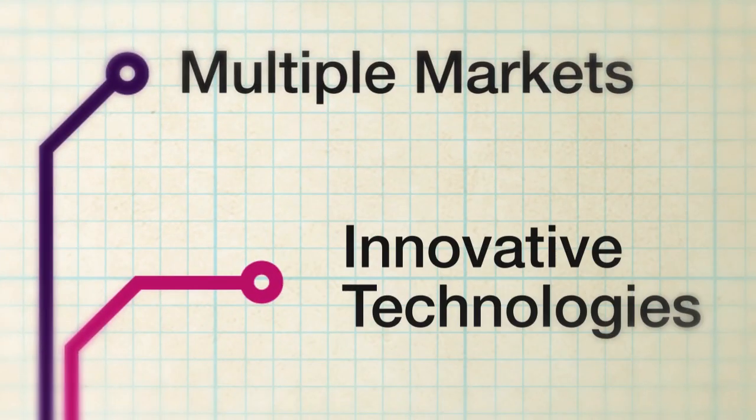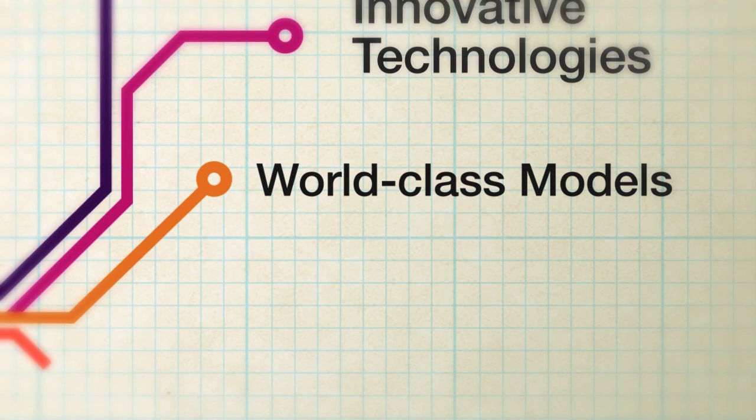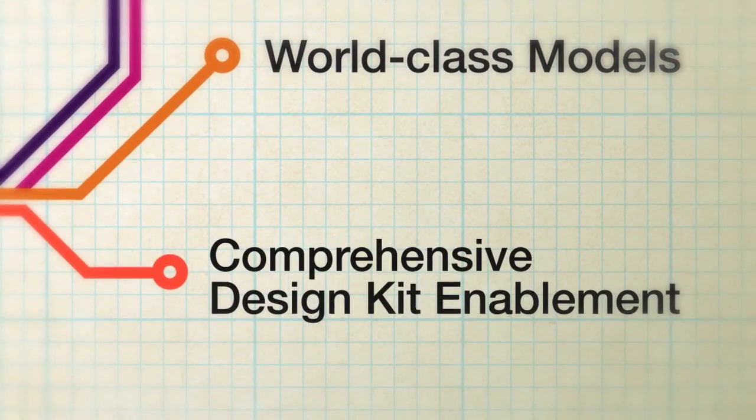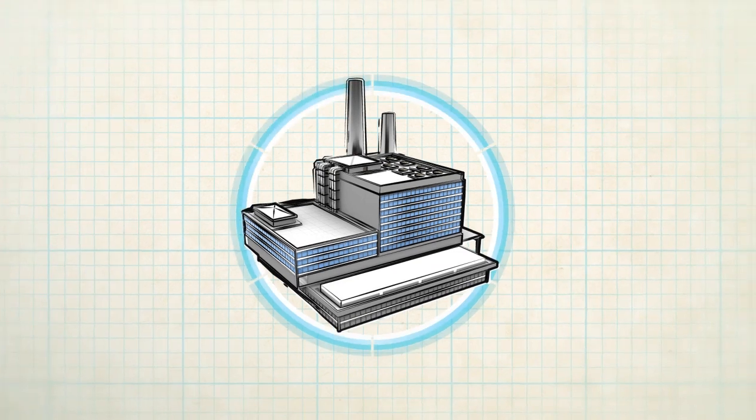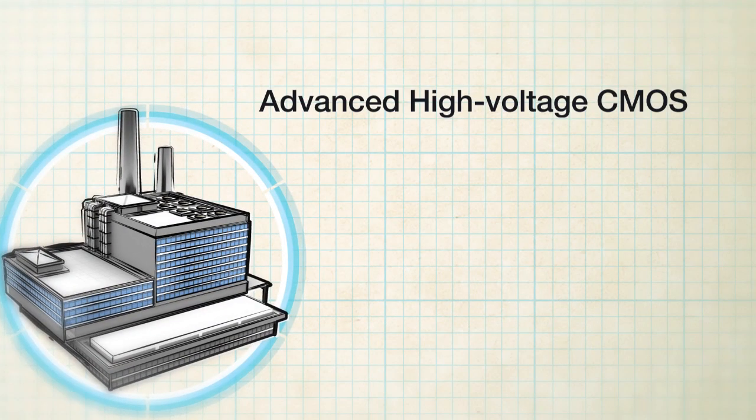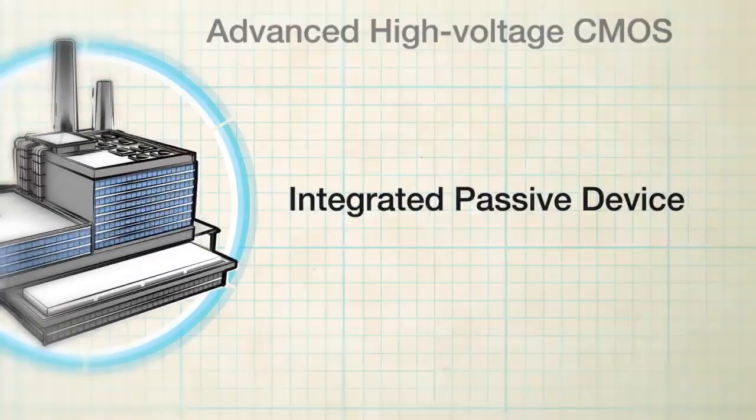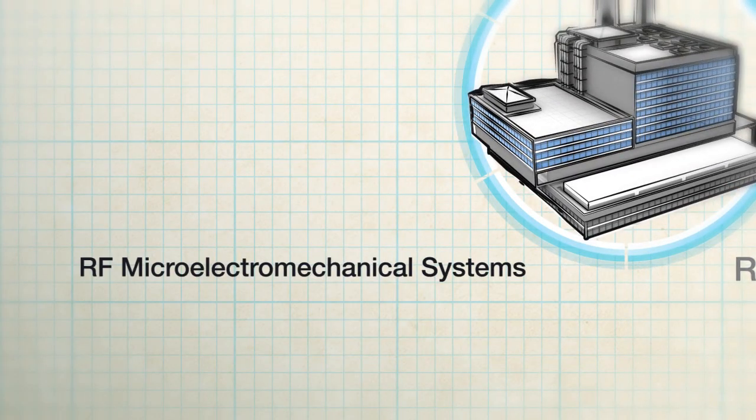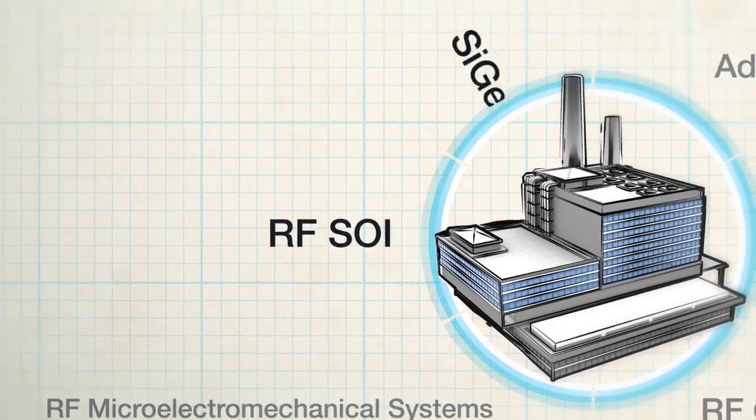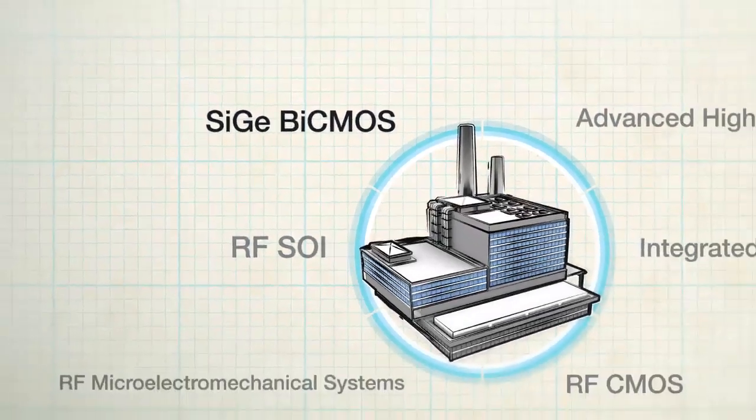Leveraging innovative technologies, world-class models, and comprehensive design kit enablement, the IBM portfolio of analog mixed signal offerings includes advanced high voltage CMOS, integrated passive device, RF CMOS, RF micro electromechanical systems, RF SOI, and SiGe BiCMOS technologies.